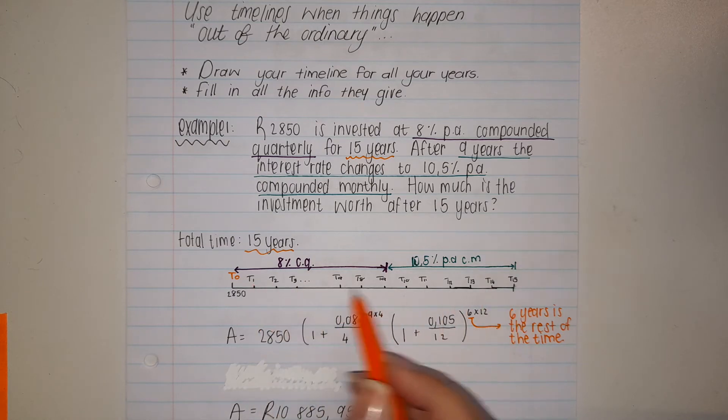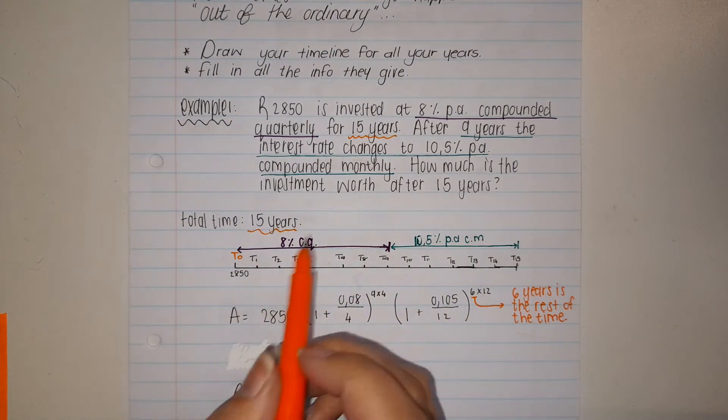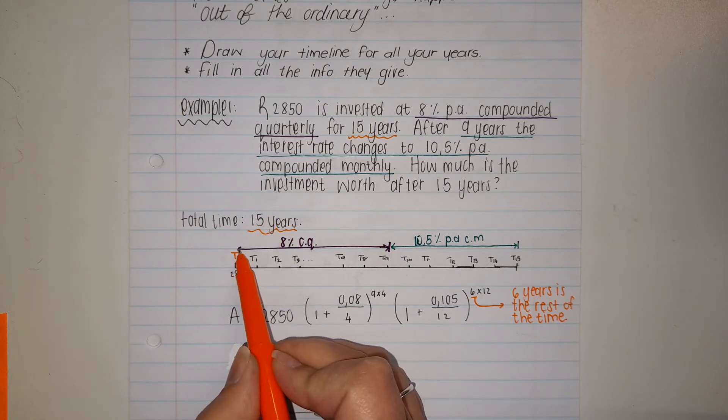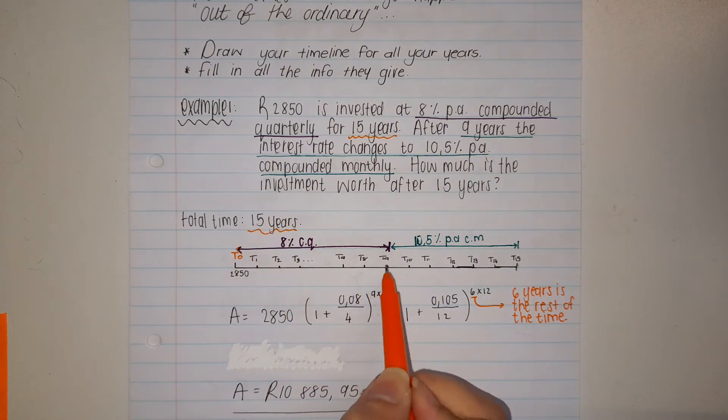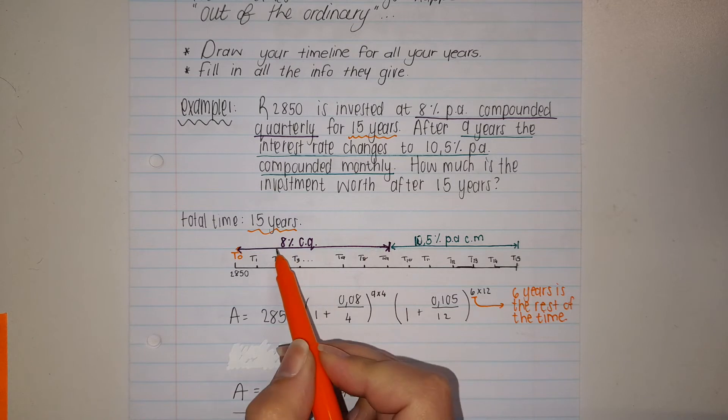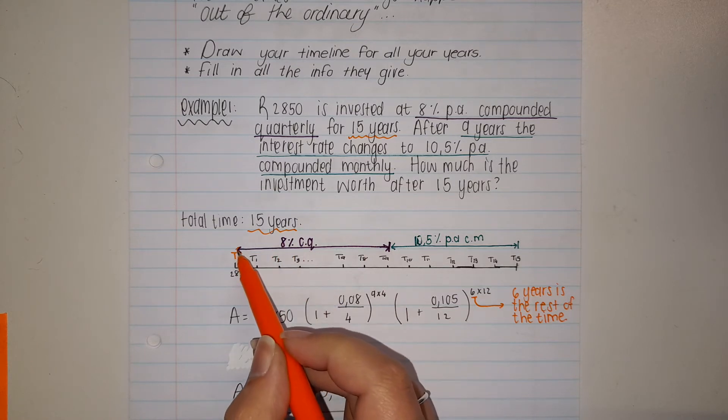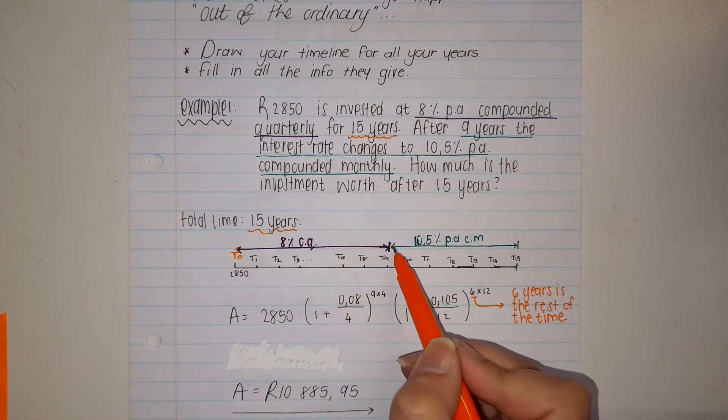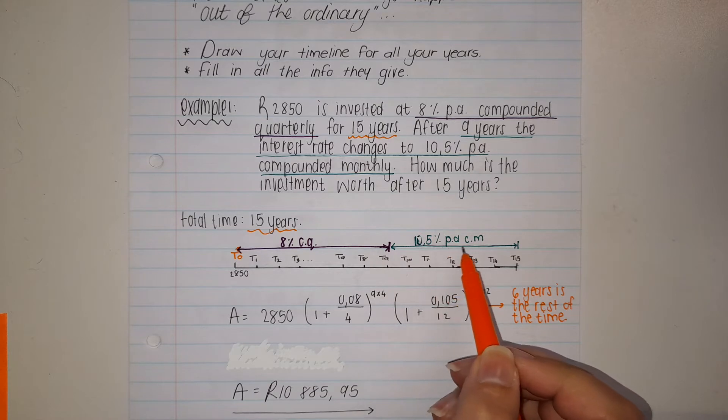Then I fill in my information. I said from the beginning, year zero up until year nine, we had 8% compounded quarterly. Then from this year it changed to 10.5% per annum compounded monthly.